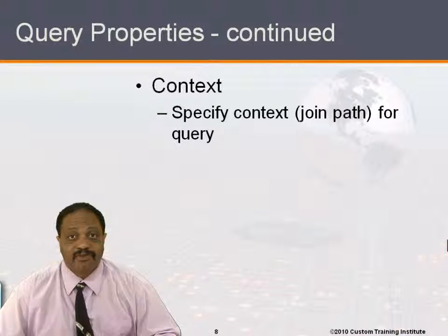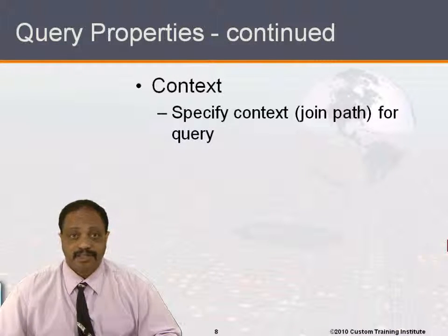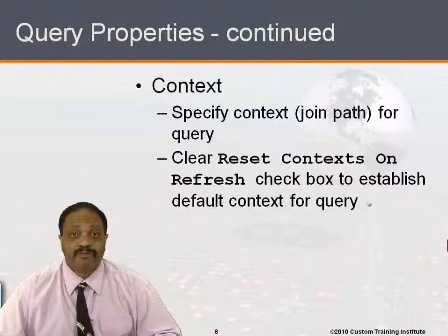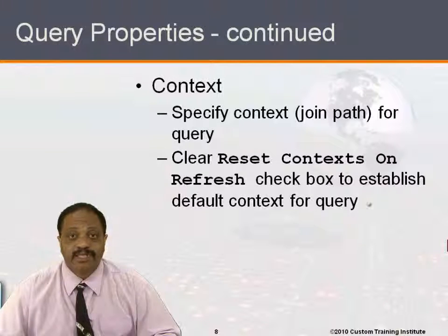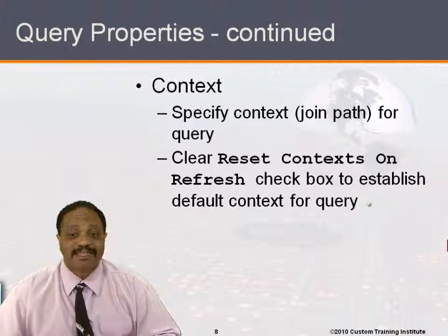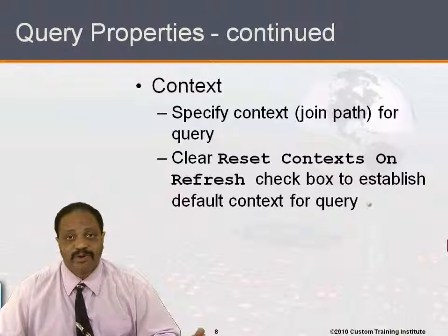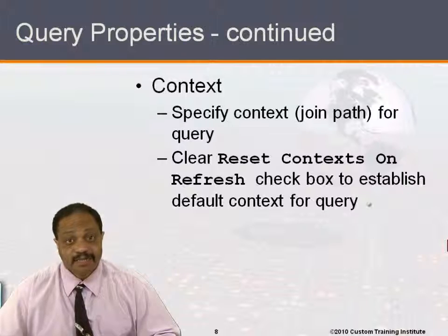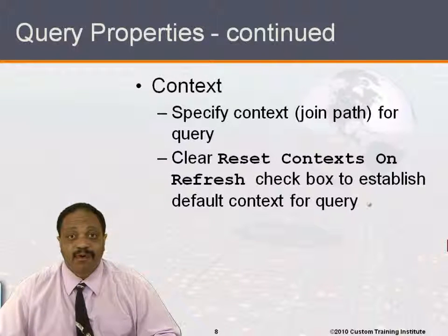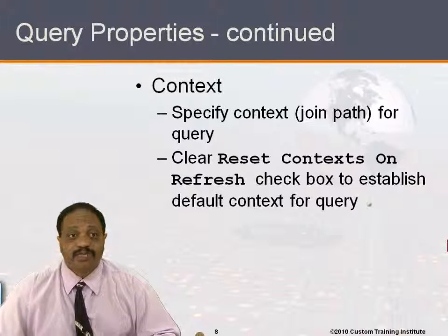The context property of a query allows us to specify the context — that is, the join path — associated with a particular query. By default, when a query is set up, the contexts are always reset when the query is refreshed. So if you're trying to set up a default context, the reset contexts on refresh checkbox needs to be turned off. Otherwise, each time you run the query, it's going to reset the contexts and your customized join path is going to go away.